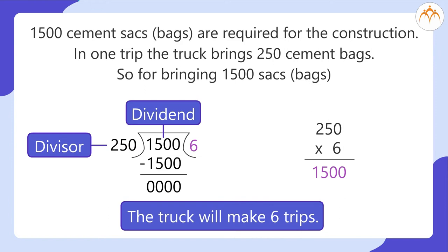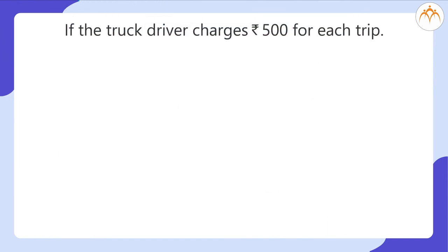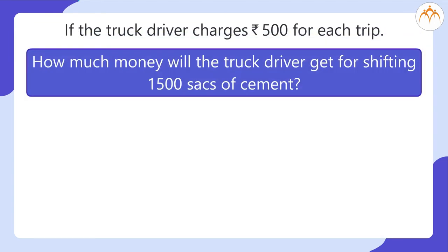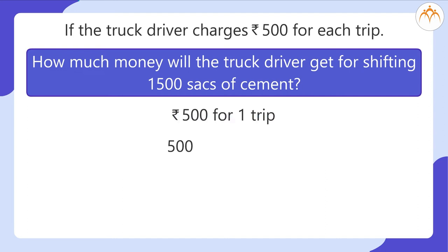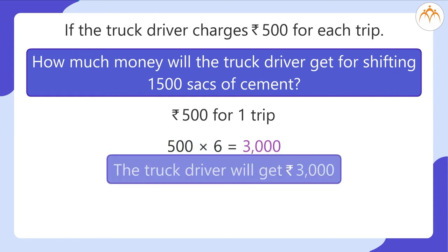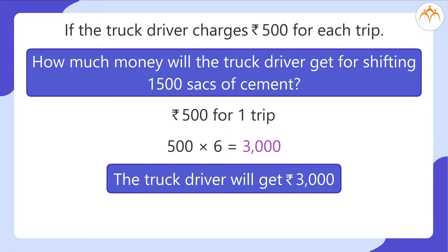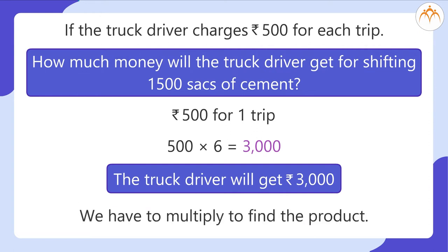The question does not end here. If the truck driver charges 500 rupees for each trip, how much money will the truck driver get? 500 rupees for one trip — so how many rupees for six trips? The answer is 500 multiplied by 6 equals 3000. So the truck driver will get rupees 3000.